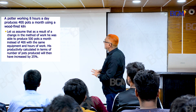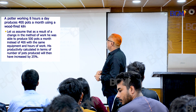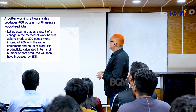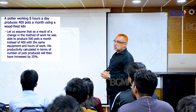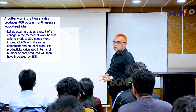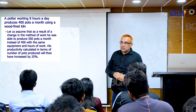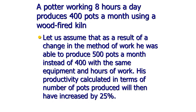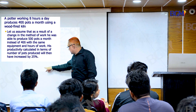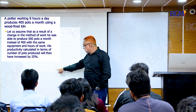A worker working 8 hours per day produces 400 pieces. In the second day, working 8 hours, the production is 420. With a new method or system, the same work is done producing 500. So what does productivity increase? 25 percent.